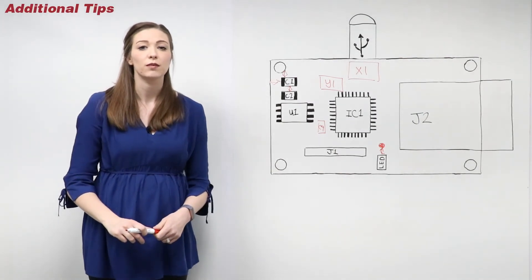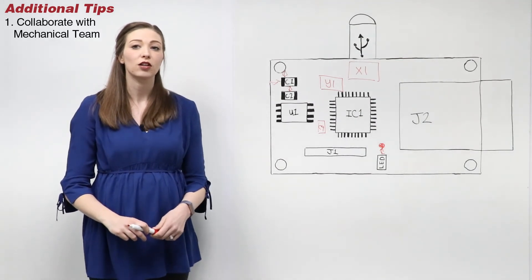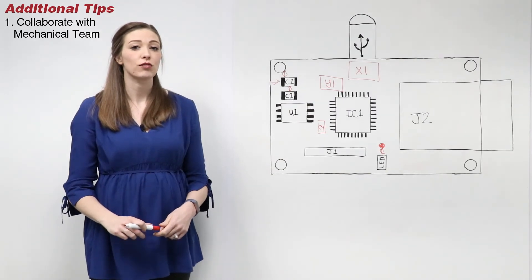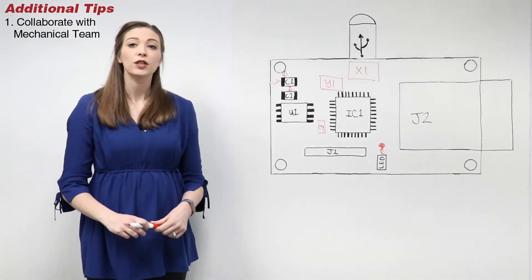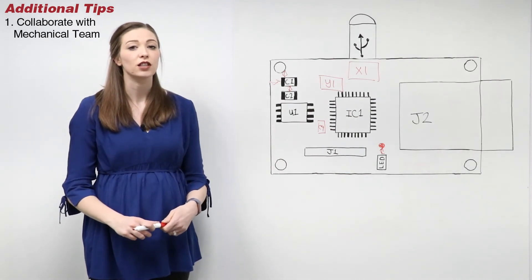Here are some additional tips for PCB part placement. One, collaborate with a mechanical engineer. Both the electrical and mechanical aspects can change throughout the design. Open communication with a mechanical engineer will help reduce errors and keep your project on track.